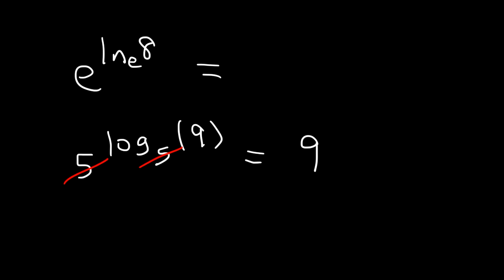Now what about E raised to the ln 8? What is that equal to? Do you recall what 5 log base 5 of 9 is equal to? Since these are the same, the answer is simply 9. The natural log has the base E, and so these are the same. And the answer is simply 8.